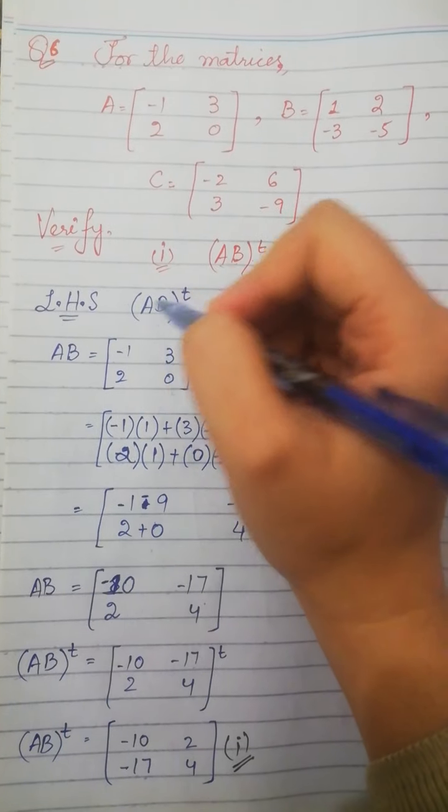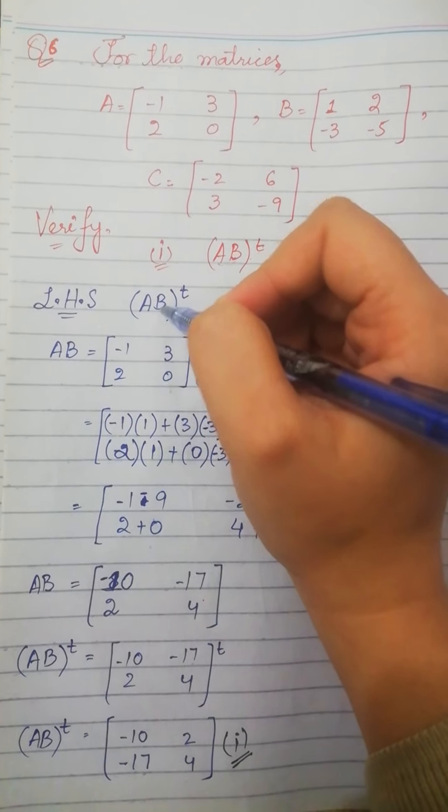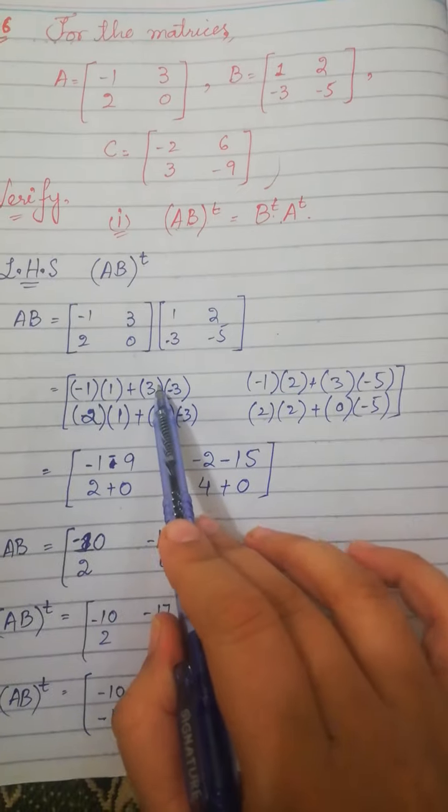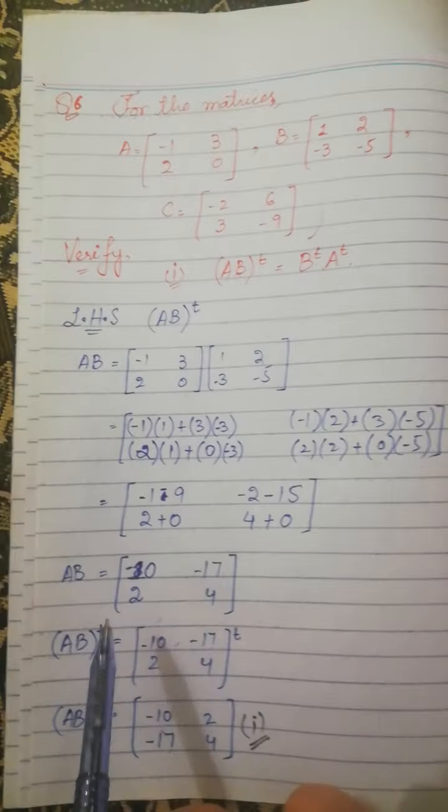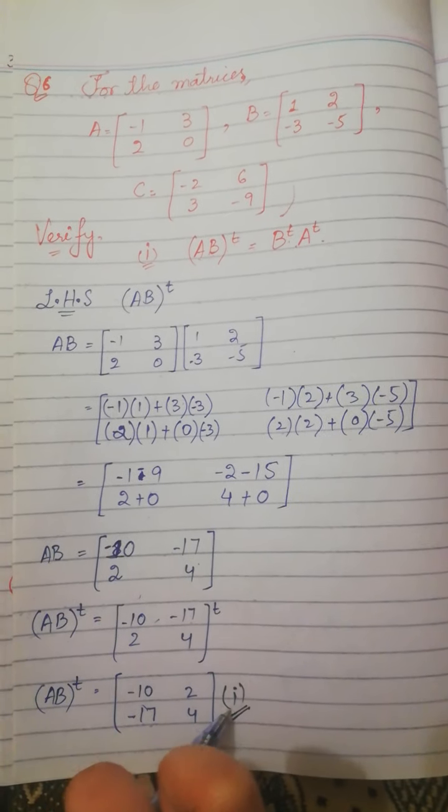AB transpose is the left hand side. AB transpose means A and B product, then take its transpose. First we compute the product and make it transpose. On the right hand side, we have B transpose A transpose.